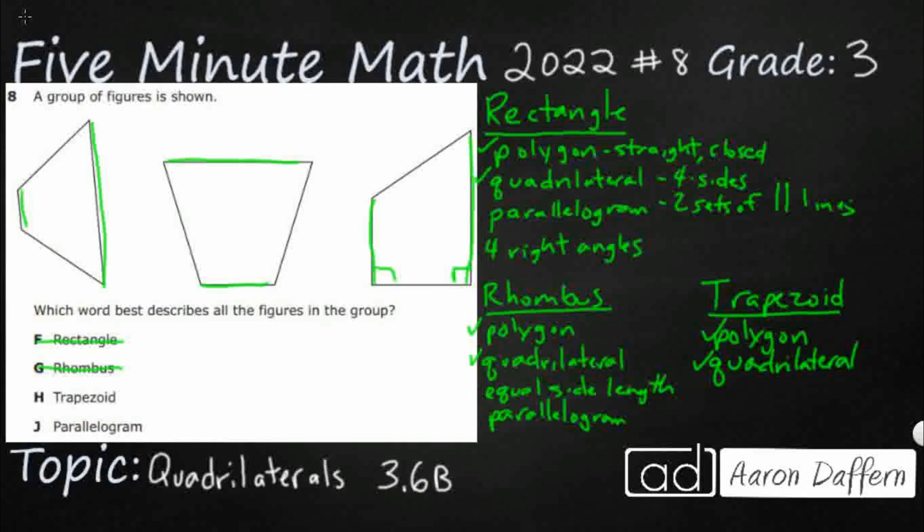Trapezoids only have one set. That's different. Parallelogram is two sets of parallel lines. This only has one set of parallel lines. And that's it. That's just what makes trapezoids themselves.